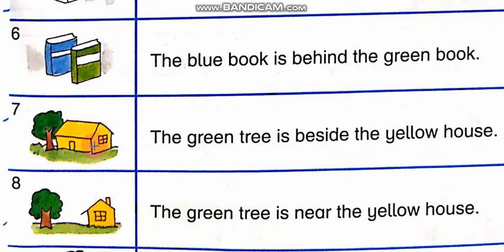Jou green tree hai, woh beside me — pass, karib, uske saath hi hai. Toh ye hai yellow house aur ye hai green tree. Green tree yellow house ke saath hai. The green tree is beside the yellow house.